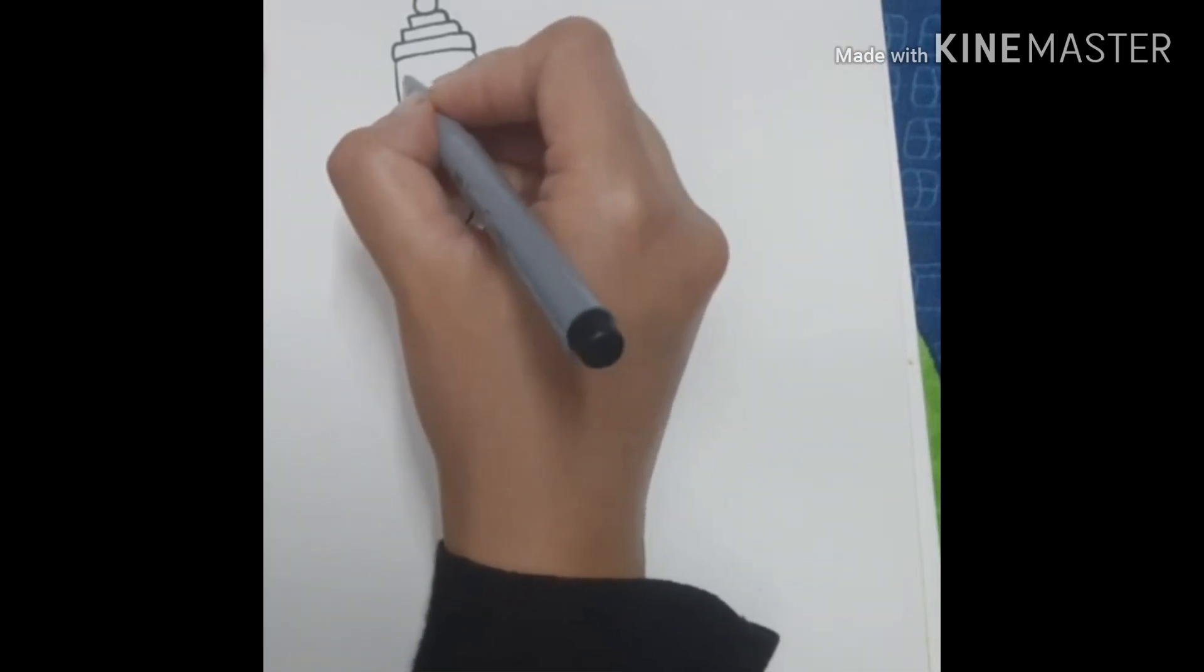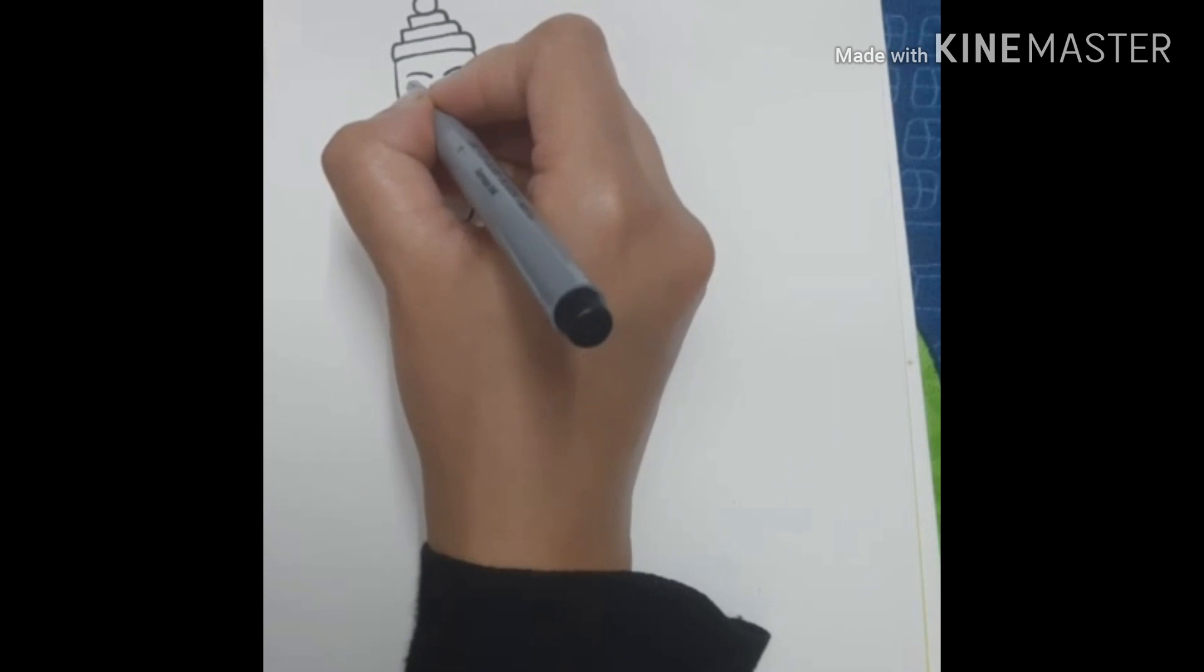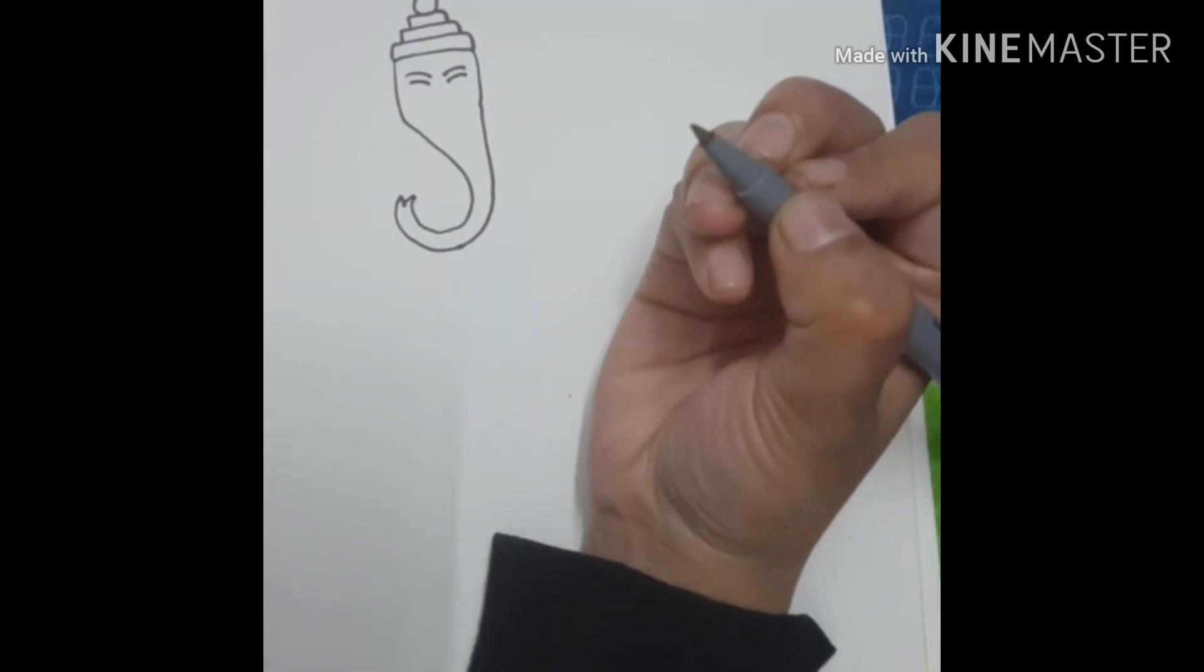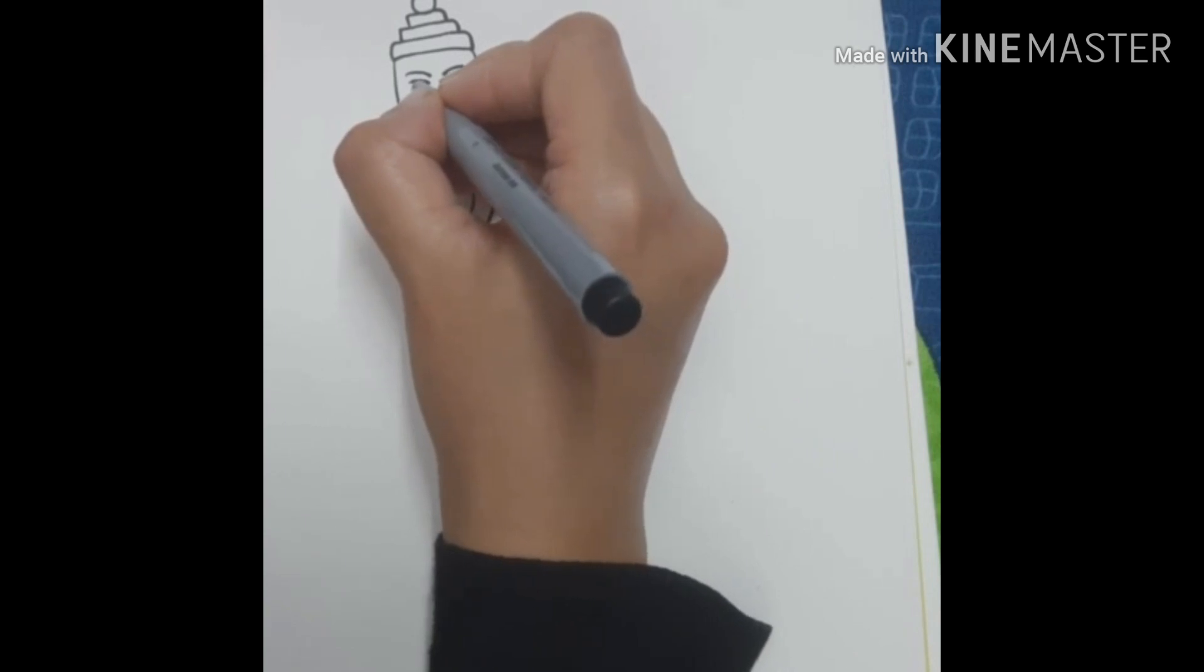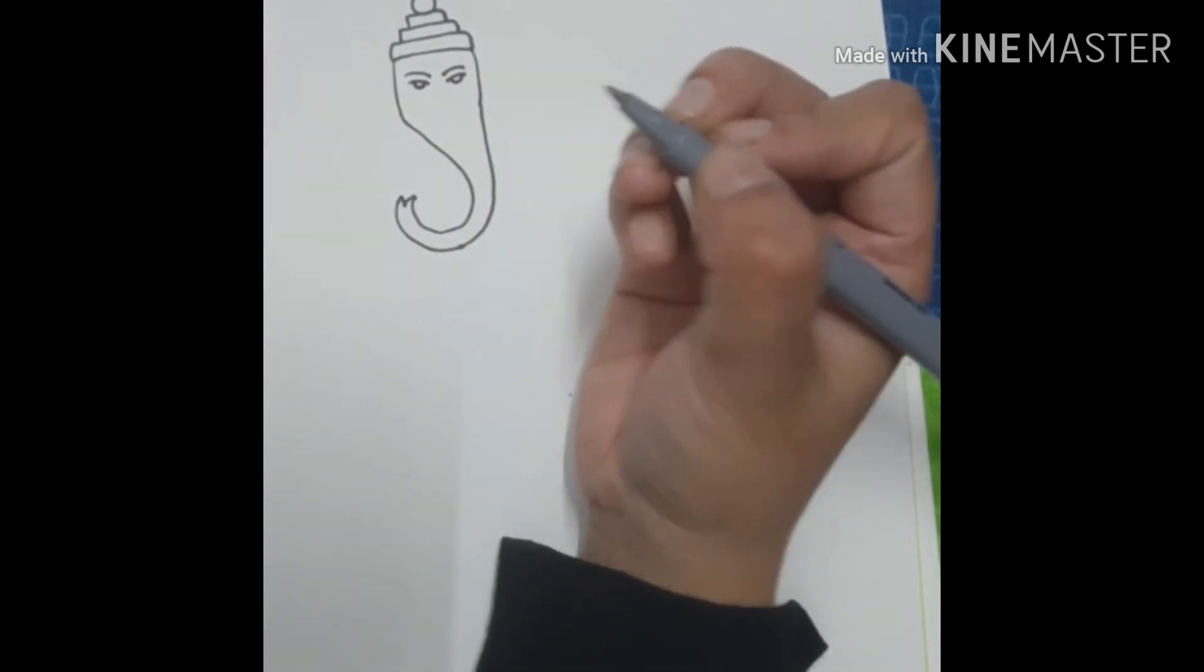For the eyes, you need to make a small curved line. Under the eyebrows, you need to make two other lines. And under the eyes, you need to make two small semi-circles.